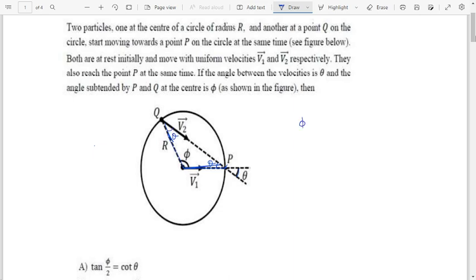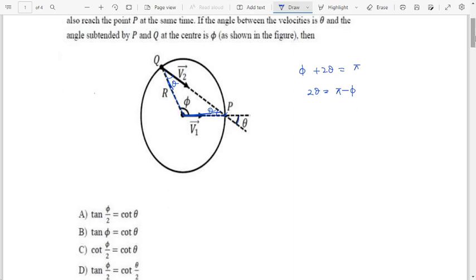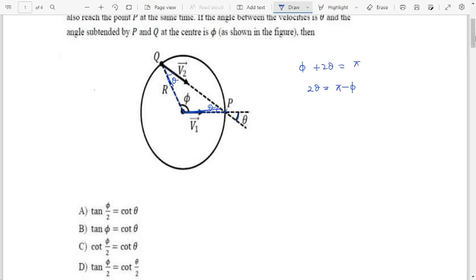So from here we can say that phi plus 2 theta is nothing but pi degrees, so from here we can say that 2 theta is nothing but pi minus phi. Now you can take tan on both sides, so or you can say theta is equals to pi by 2 minus phi by 2. Right?